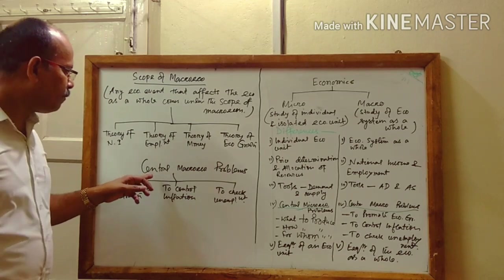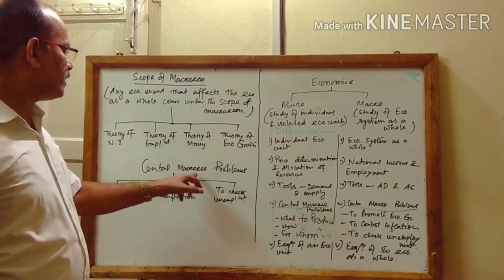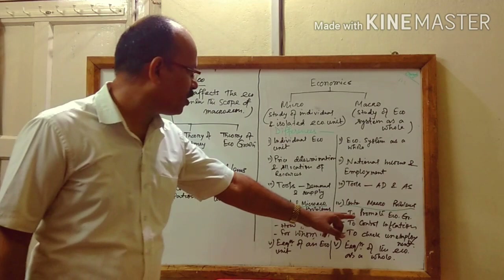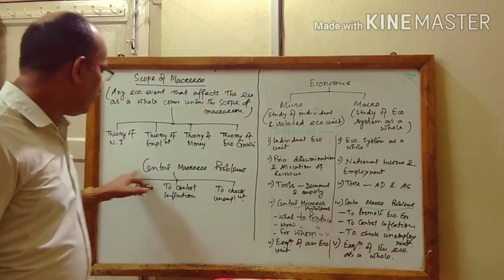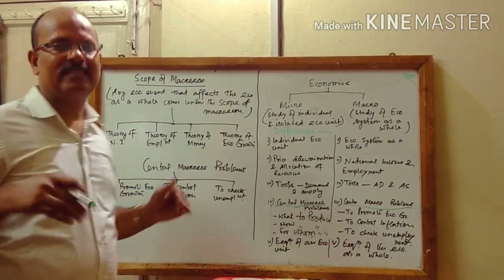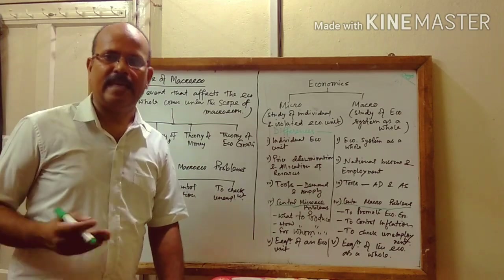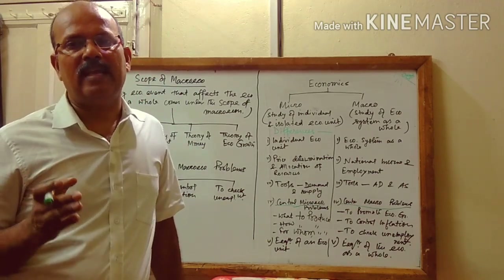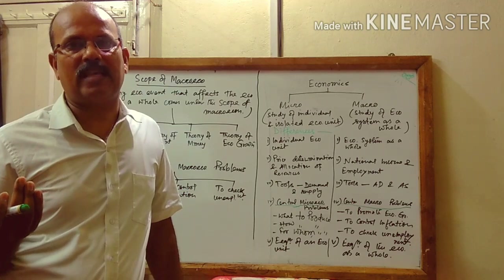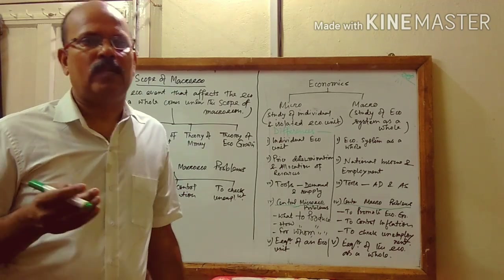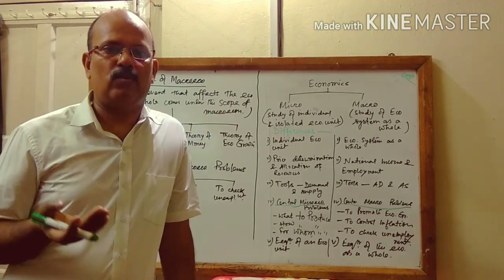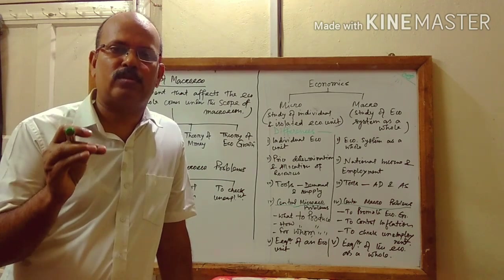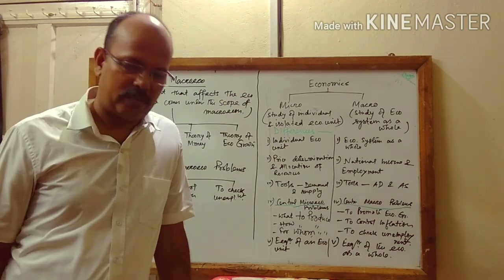The central macroeconomic problems have already been discussed and may be discussed separately as well. Next, I am going to explain what is the business cycle and what are the different phases of the business cycle. I will also include what is a final good, what is a consumption good, intermediate good, and different types of goods in that chapter.